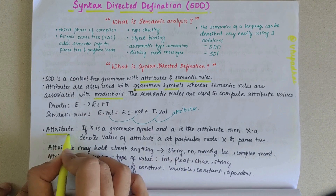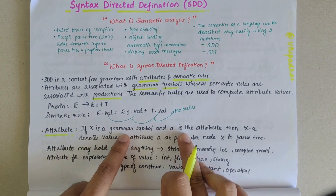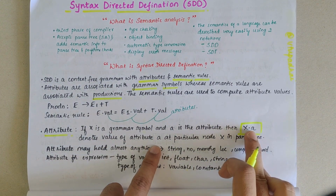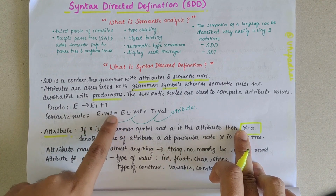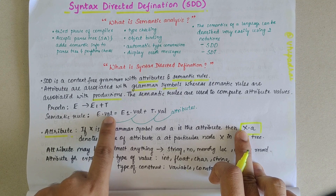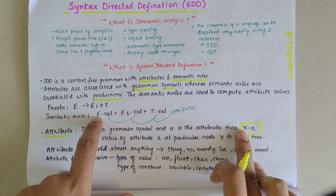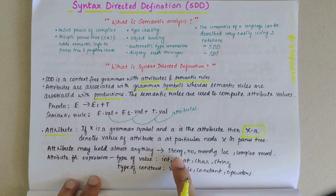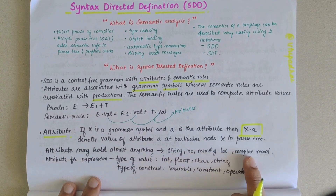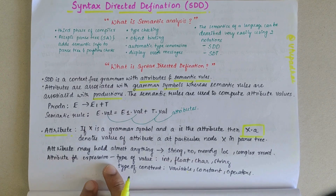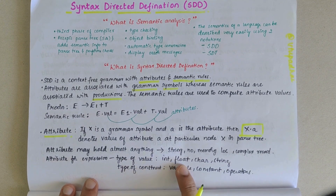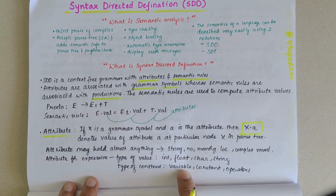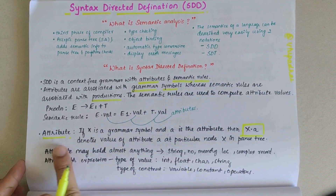Understanding what an attribute is: if X is a grammar symbol and A is the attribute, then X.A denotes the value of attribute A at a particular node X. An attribute may hold almost anything — it could be a string, a number, a memory location, or a complex record. For expressions, depending on the type of value, it could be int, float, char, string, boolean, etc. Depending on the type of construct, it could be variable, constants, or operations.